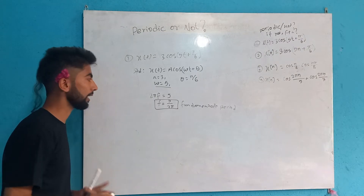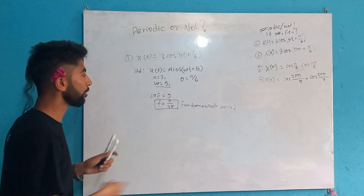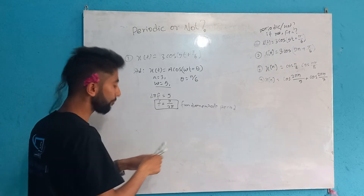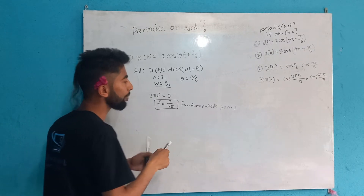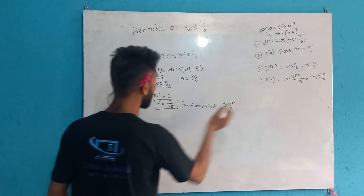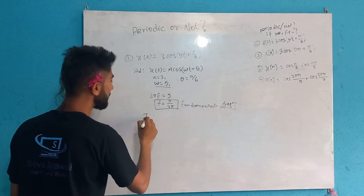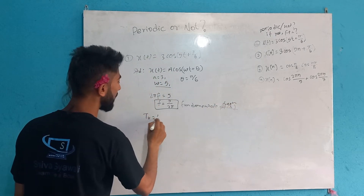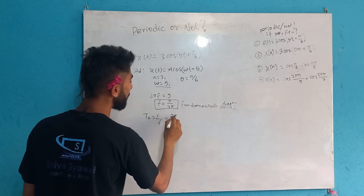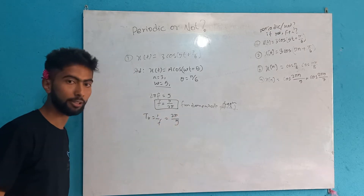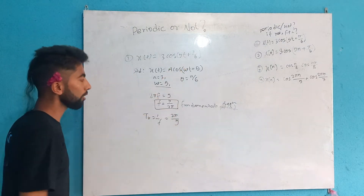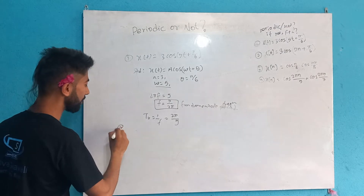Perfect. The fundamental period is T = 1/f₀ = 2π/ω = 2π/5. So the fundamental period of this signal is 2π/5.